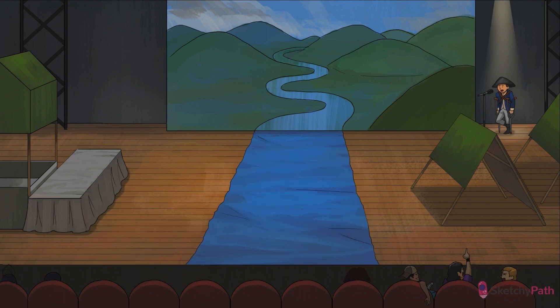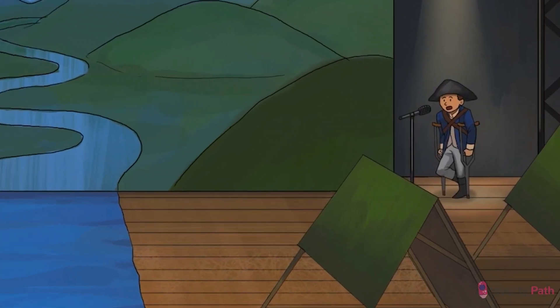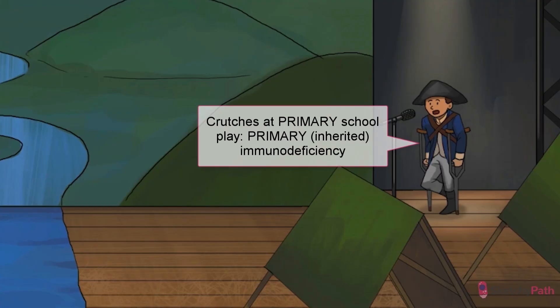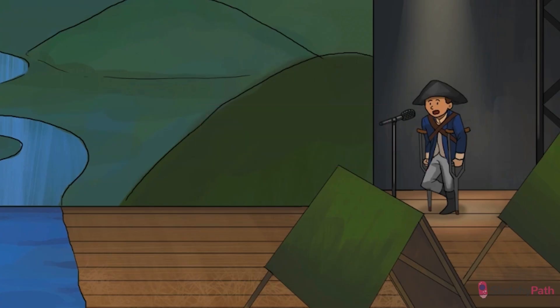To start off our discussion of primary immunodeficiency, we're going to watch a dysfunctional primary school play reenacting the war between Great Bruton and the ragtag revolutionaries led by George Washington. Welcome to the Continental Army Camp, opening night for our 5th grade production of 1776. It's been 5 months since the Continental Congress declared the independence of the American colonies. General George Washington and his troops are camped along the Delaware River on Christmas night, preparing to cross 300 yards of icy river to fight for liberty. Take a look at this sad, injured soldier and narrator — those crutches are our recurring Sketchy symbol for immunodeficiency.